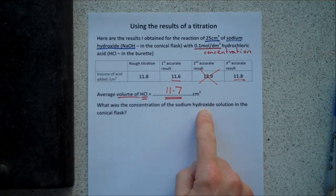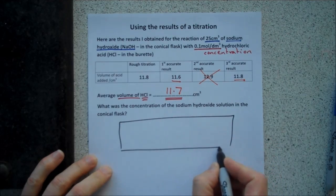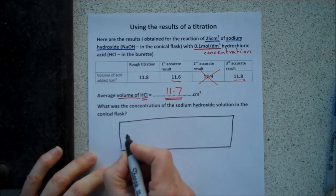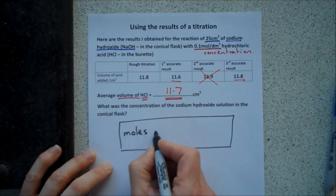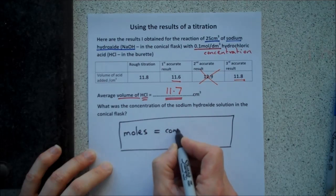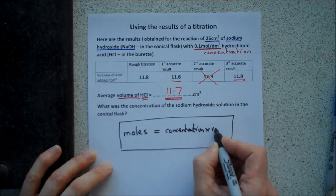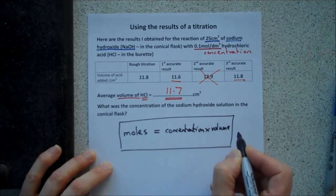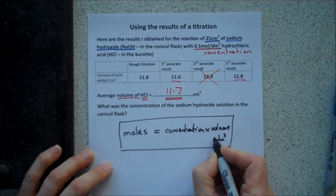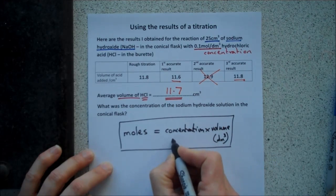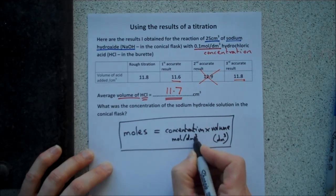We need to start by applying an important equation, and the equation is this, and it's one you need to learn, because it won't be given to you in your chemistry exam. The equation is, moles equals concentration multiplied by volume. And it's important also that you know that the volume is measured in decimetres cubed, because the concentration is measured in moles per decimetre cubed.